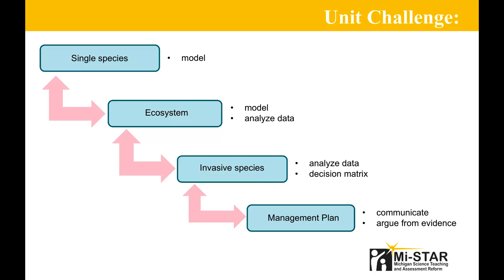Student groups work to recommend a management strategy for the introduction of an invasive species, which is a particular type of biotic change. Student teams use a decision matrix to identify the best management strategy for the invasive species in their ecosystem. Finally, teams create presentations which outline how the invasive species may change their ecosystem and provide a recommended management strategy. The goal of this presentation is to provide information to fellow classmates so the class can recommend a single ecosystem they think should be managed to the state legislator.